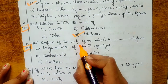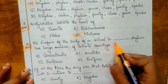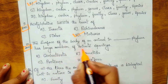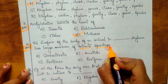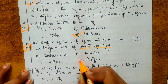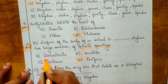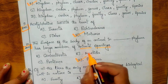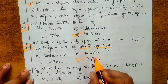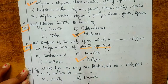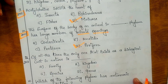Tenth question, also from 2015: the surface of the body of an animal in which phylum has a large number of minute openings? The answer is Porifera, because they are asking about large numbers of minute openings on the body, which is characteristic of Porifera.